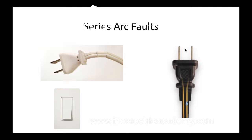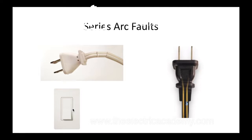Some areas where we see series arc faults are cords that get frayed, cut up, or beat up and old. Another very common area that you see series arcs are switches. When we have arc fault protection, we need to make sure that it can recognize the difference between a fault and a switch, because when you switch — especially when you're dealing with inductive loads — there's always a bit of an arc. A switch will always have an arc; you've probably seen that little spark.